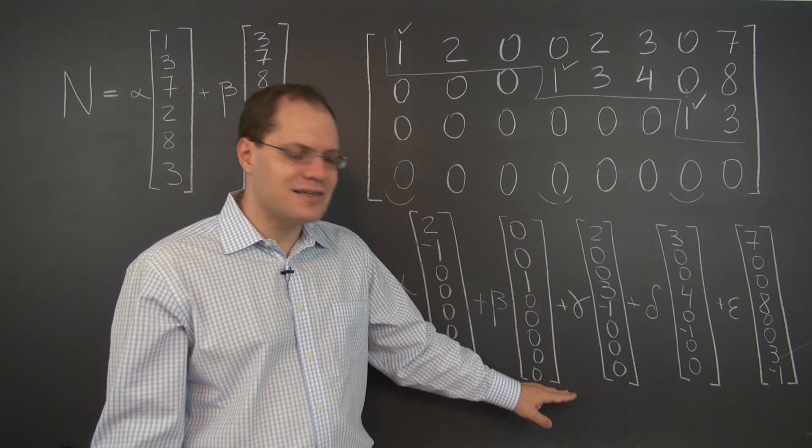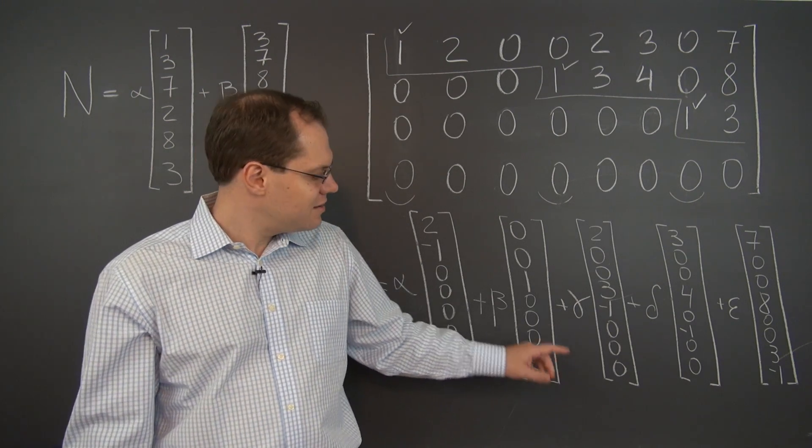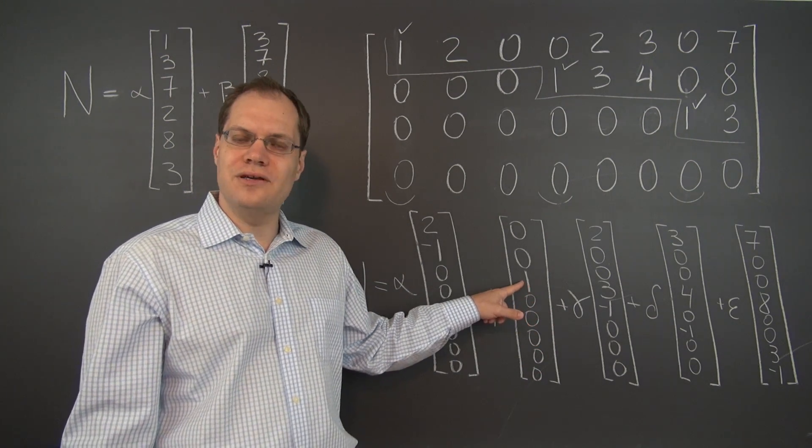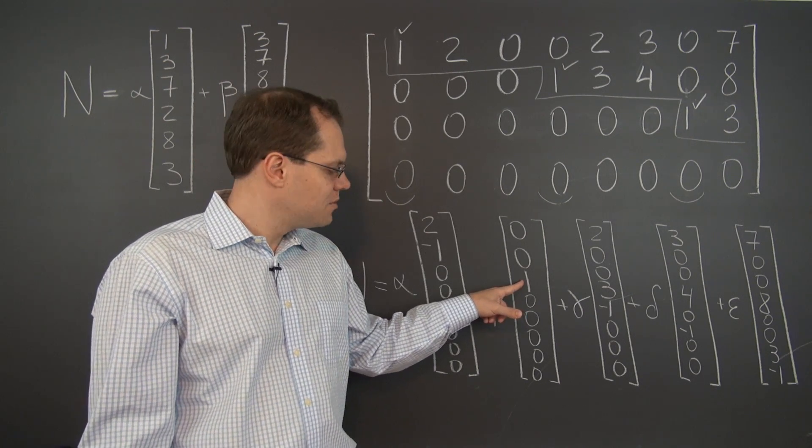When you look at a vector like this and you realize that it's in the null space, then you immediately know that column 3 must equal 0, must be the 0 column. Why?